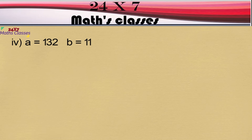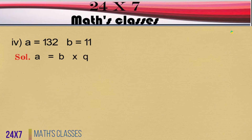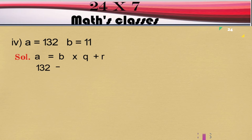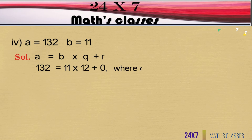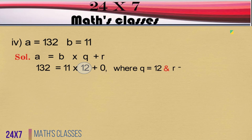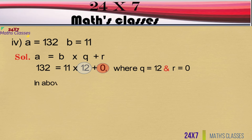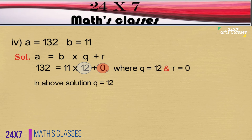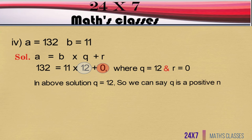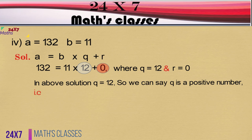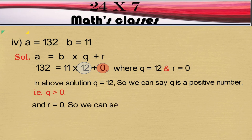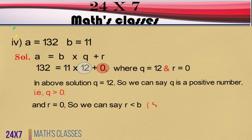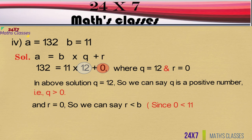Now we solve the fourth problem. After dividing 132 by 11, we can write it as 132 = 11 × 12 + 0, where q is equal to 12 and r is equal to 0. In the above solution, q is equal to 12, so we can say q is a positive number, that is q > 0, and r is equal to 0, so r < b since 0 < 11.